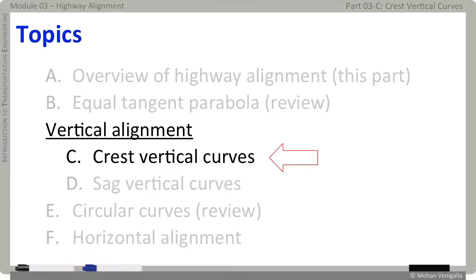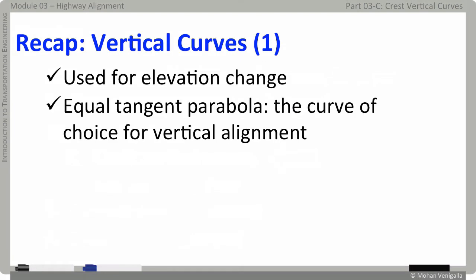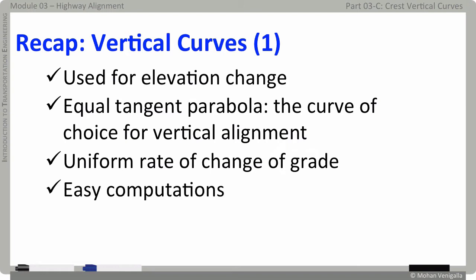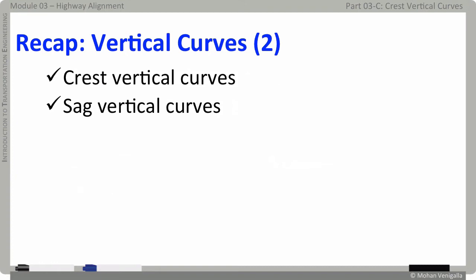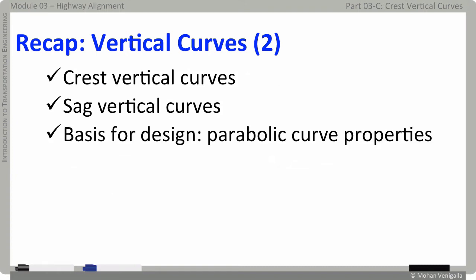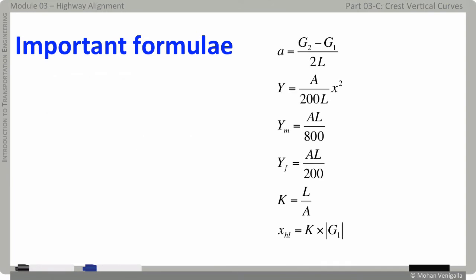Welcome back. We are here in our video series on Intro to Highway Transportation Engineering. First a quick recap on what we covered in this module so far. We need vertical curves for effecting elevation change along highway alignment. We use equal tangent parabola for vertical alignment for two good reasons: a parabola provides uniform rate of change of grade over the length of the curve and computations are easy. Vertical curves can be crest vertical curves or sag curves. The basic formulas used in curve design are derived from the properties of parabola.